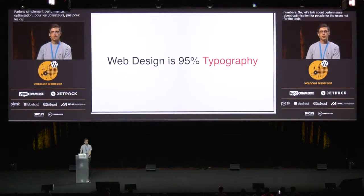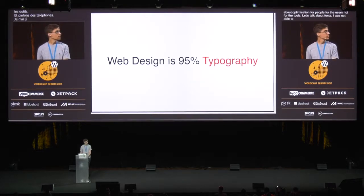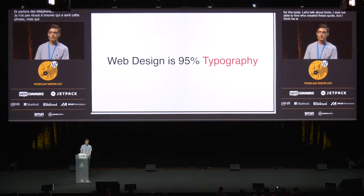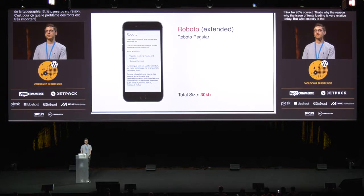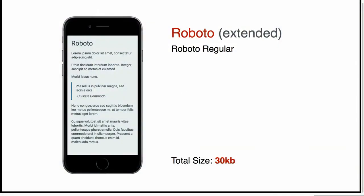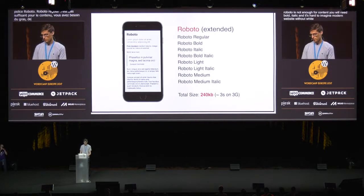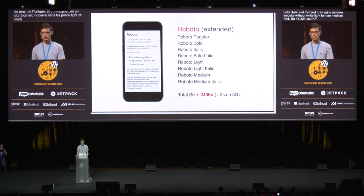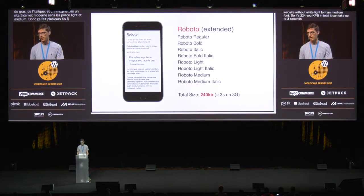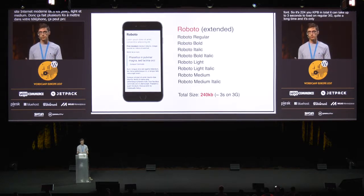Let's talk about fonts. Let's say you use Roboto font on your website. Its size is only 30 kilobytes — not a big deal. But just Roboto regular is not enough for styling content. You will need bold, italic, and it's hard to imagine a modern website without light and medium fonts. So it's 240 kilobytes in total. It can take up to three seconds to load on a regular 3G connection. That's quite a long time, and it's only one font. Usually there are two, three, or more fonts on a website.